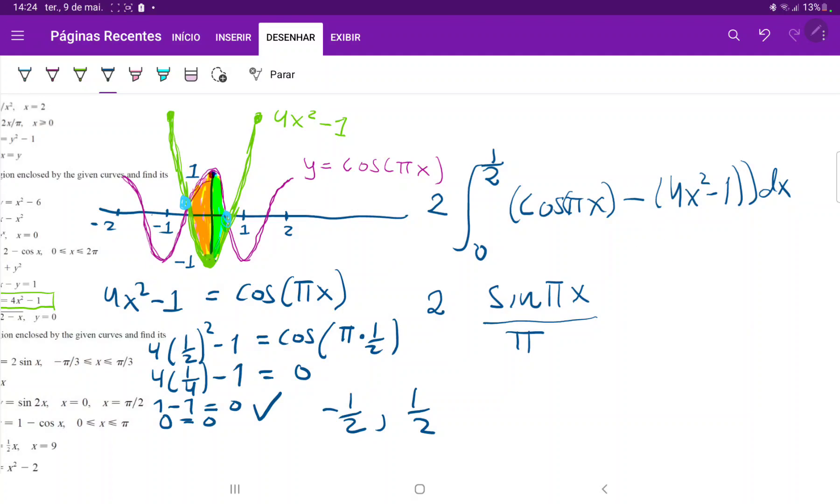Then minus 4x². So it's minus 4x³ over 3. And then minus and minus 1 becomes plus, so plus x. All of this times 2, evaluated from 0 to 1 half.